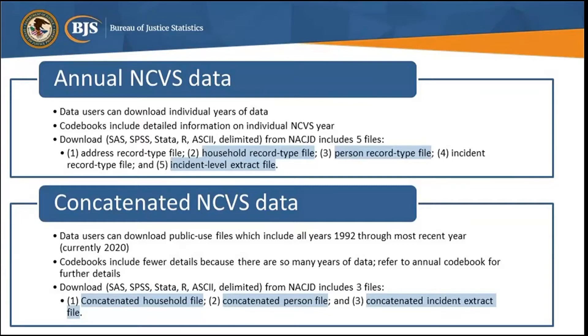Data users should refer to the specific annual codebooks for more information about a particular year of NCVS data. There are three data files included when you download a concatenated NCVS study: household, person, and incident level extract file.